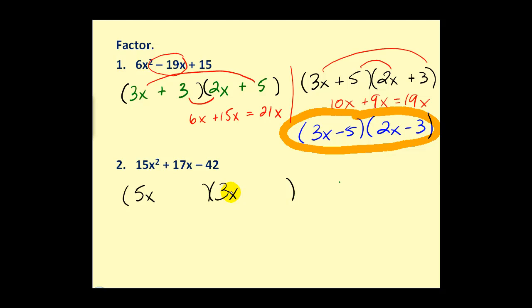Of course it could be 15x and x we just don't know. Next the second positions must come from the factors of -42. Some factors of -42 would be -7 times 6, -6 times 7, -14 times 3, -3 times 14. How do we know which factors to use? We don't.